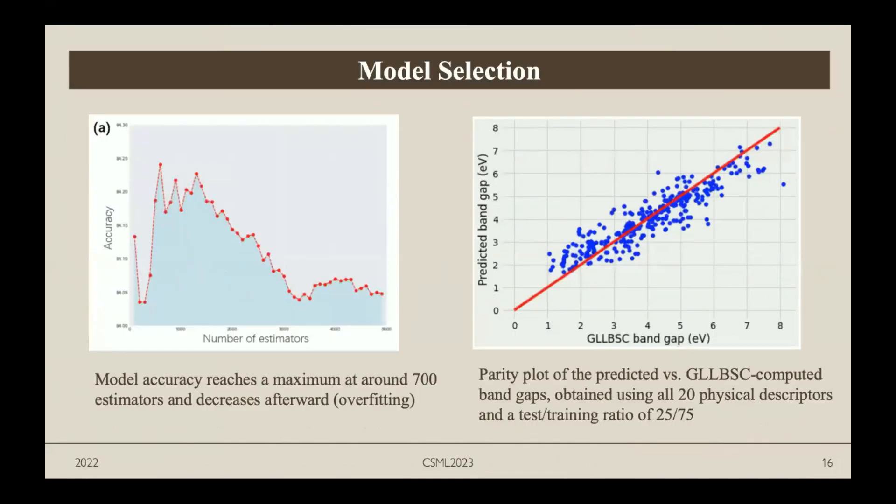We decided to use 700 estimators because we saw that the accuracy first arises and then decreases after 700, which we believe is due to overfitting. The right side shows a parity plot of the predicted versus the computed band gaps using all 20 physical descriptors.